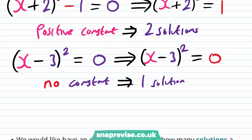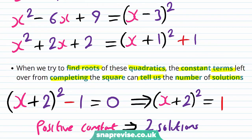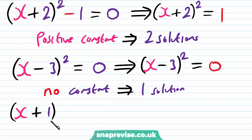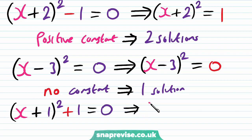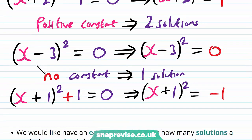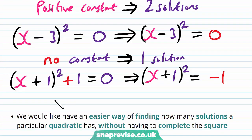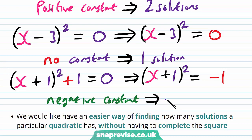Finally, for our last equation, we have x plus 1 all squared plus 1 set equal to zero. By rearranging, we get x plus 1 all squared equals minus 1. Because we have a negative constant on the right-hand side, we're not able to square root, and so we get no solutions. There is no number for which we can square and get minus 1.